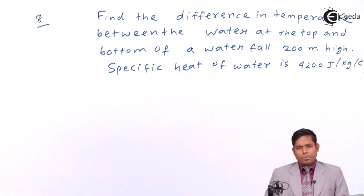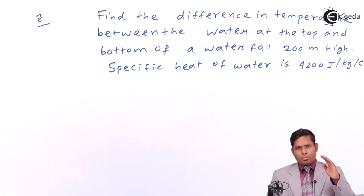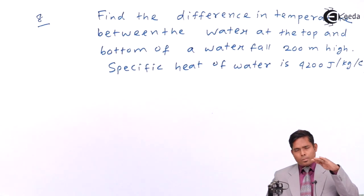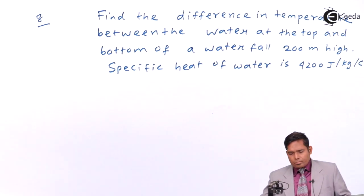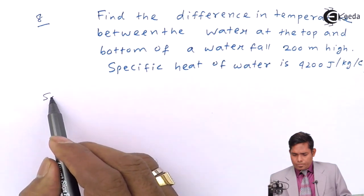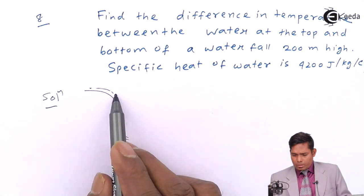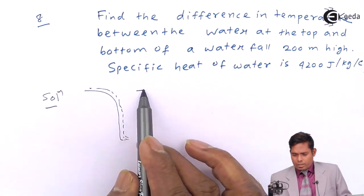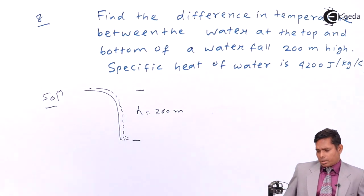The question is the temperature difference between the water at the top and bottom of the waterfall. Water is falling from a height to the ground, so the temperature at the top and the temperature at the bottom must be different. The height is given as 200 meters.